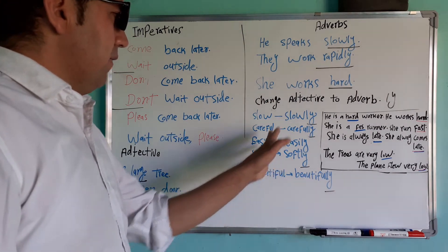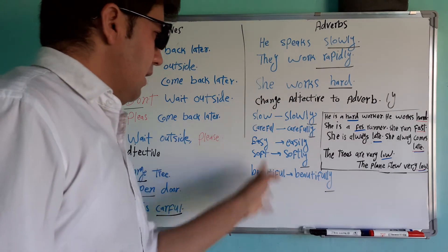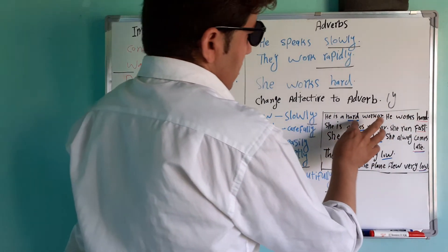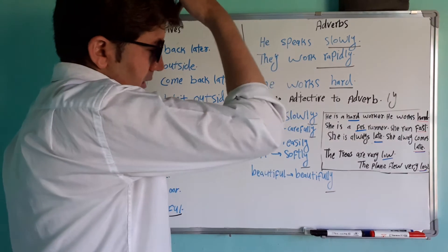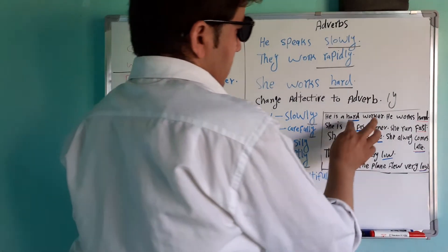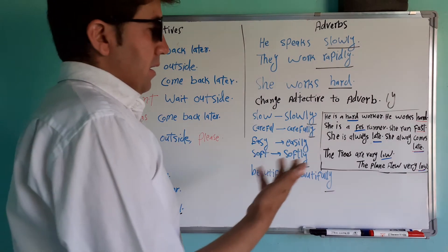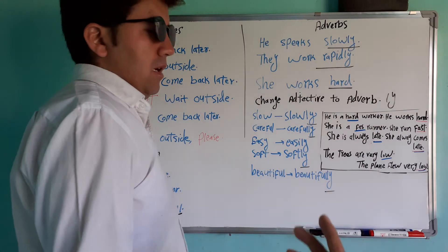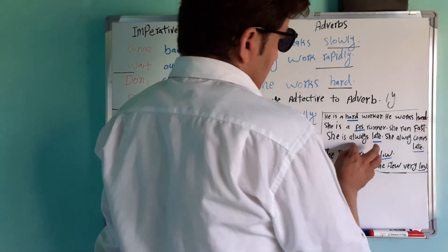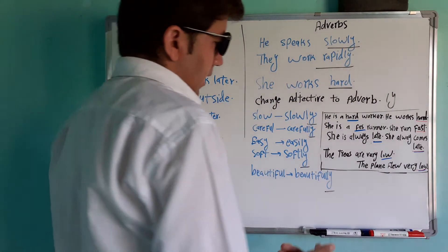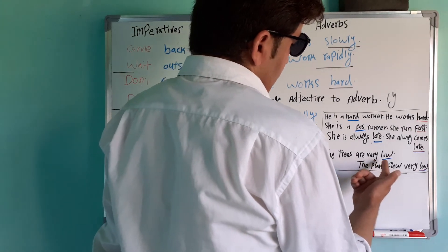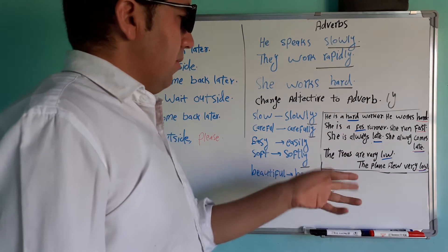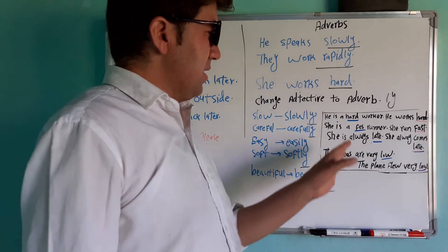تقریب کن: -ly اضافه کنه تبدیل شد به قید. اما بیا ببینیم: He is a hard worker — یک مرد زحمت‌کش است. اینجا hard چی هست؟ Adjective هست — در باره یک مرد صحبت کرده، مرد را توصیف کرده. She is a fast runner — یک دونده بسیار سریع است. The trees are very low — درخت‌ها بسیار پایین هستن. پس hard, fast, late, low — چون در باره نون‌ها توصیف داده، اینا adjective می‌شن.